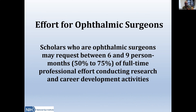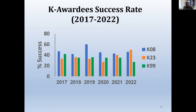About three years ago, we reduced the effort requirement to 50% for surgical specialties, because we realized that in surgery you need to develop your surgical skills as well as your research career. Here is the data for K award success rates from 2017 to 2022. Blue is K08, orange is K23, and green is K99. Our funding rates are usually from 30% to 40-45%, depending on the year and the number of applications received. It's a pretty good success rate and we try to do as much as we can depending on availability of money.